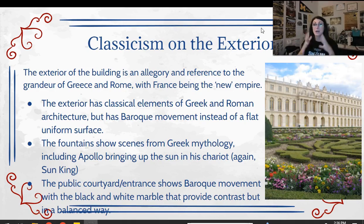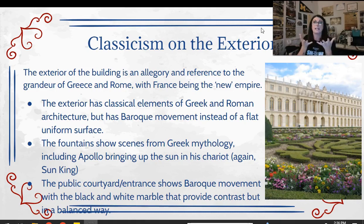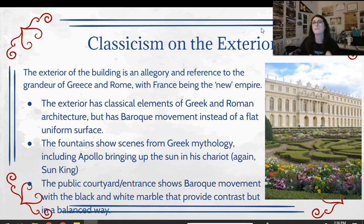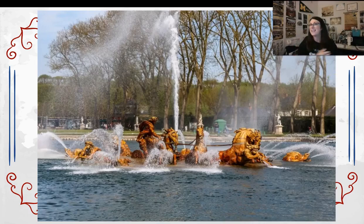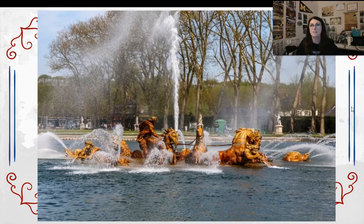Around the palace are geometrically perfect gardens, where the pathways sink down so the landscaping really pops out. You've got fountains with mythological scenes and suns on the gateposts — everything referencing Louis XIV's power. One of the fountains depicts the god Apollo, the sun god, pulling the sun up in his chariot. That's on purpose — Louis is the sun god, using allegory to equate King Louis XIV with the sun god.